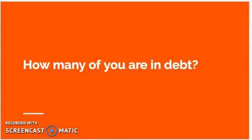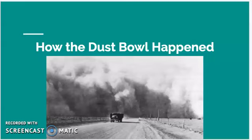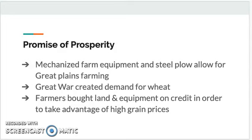I hope you found this game illuminating in terms of how this Dust Bowl business got kicked off. So now we're going to talk about how the Dust Bowl actually managed to happen. One of the big things that brings about the Dust Bowl is this promise of prosperity. Mechanized farm equipment such as the steel plow, the McCormick Reaper, and other inventions allowed for Great Plains farming — it made it easier to harvest large amounts of crops and plant on the thick-sodded soil, encouraging people to farm the Great Plains.